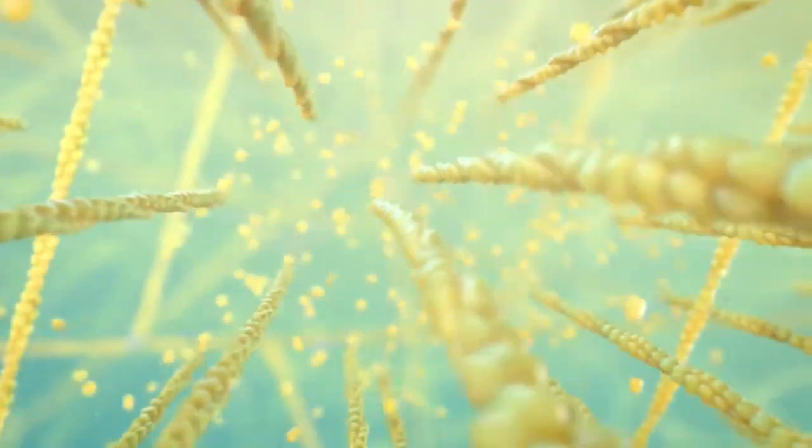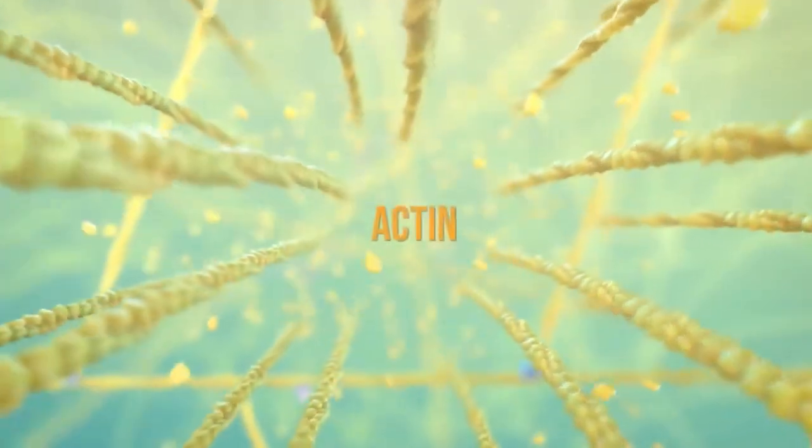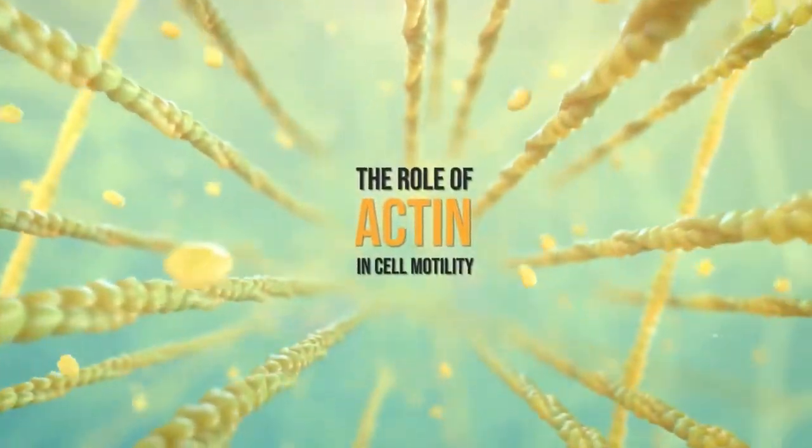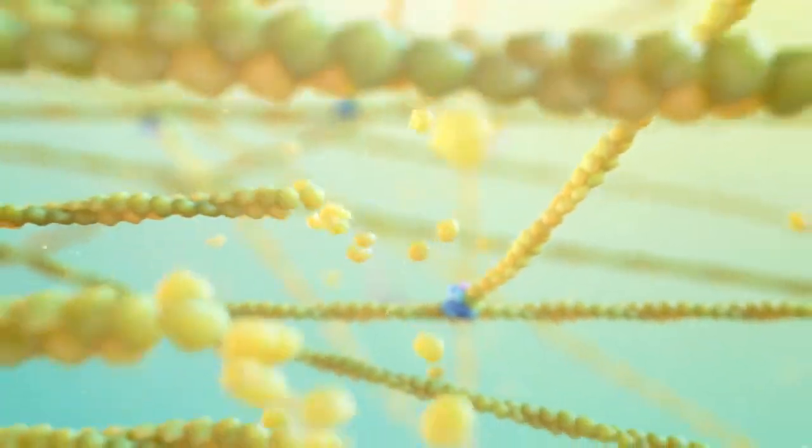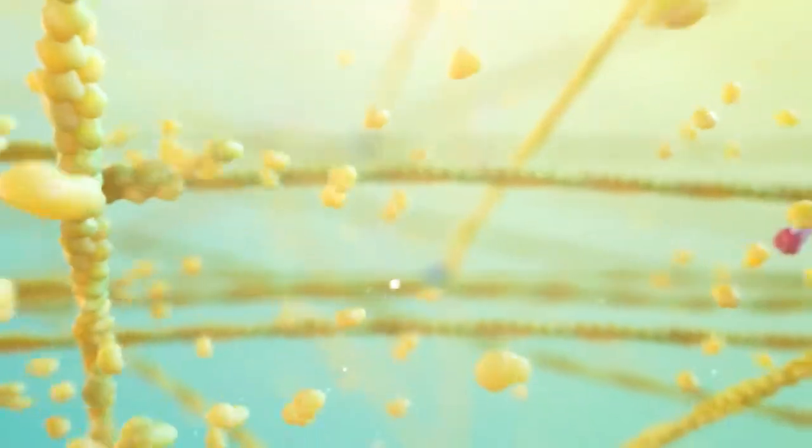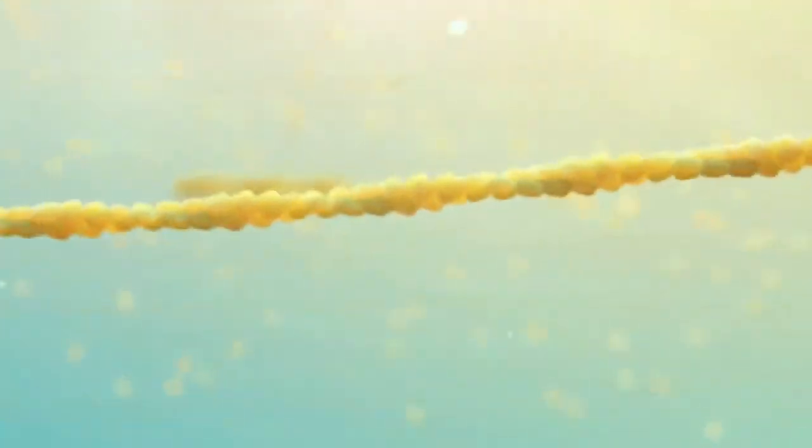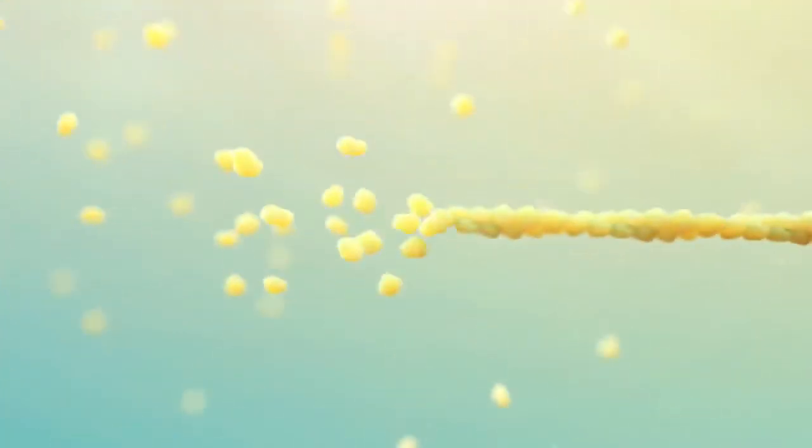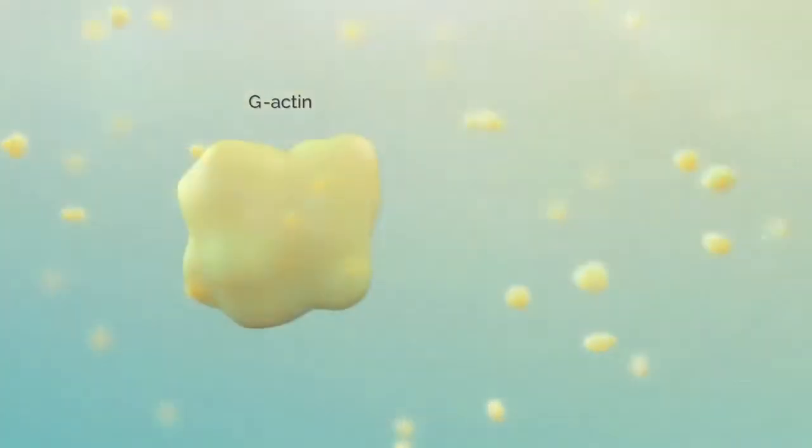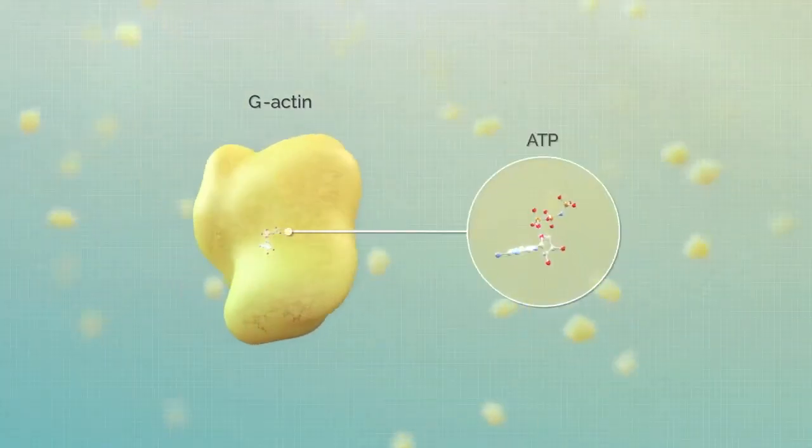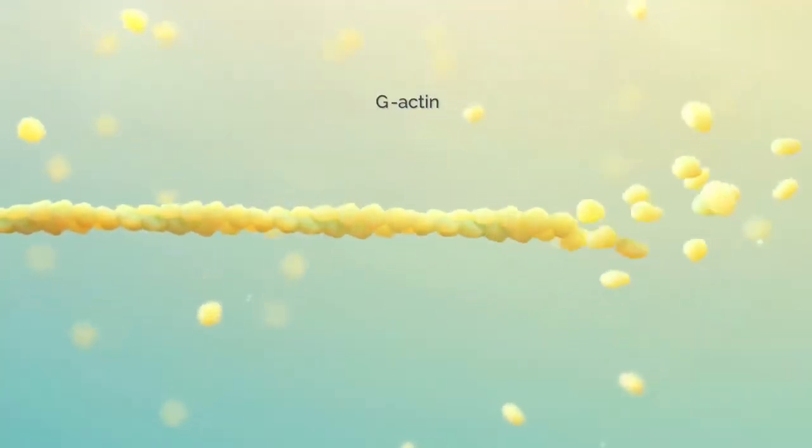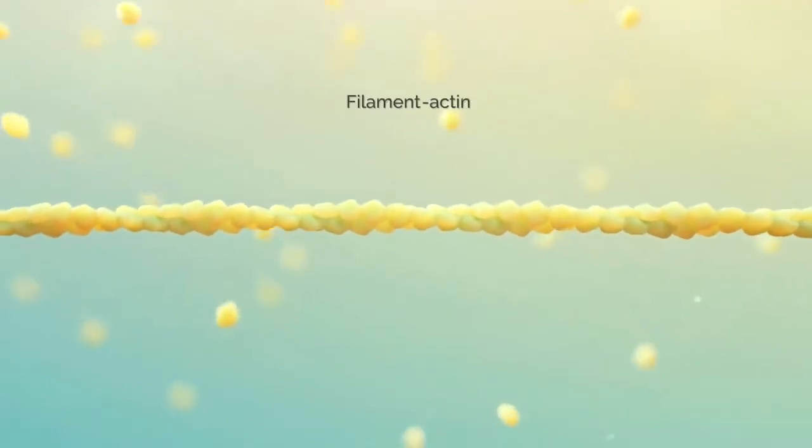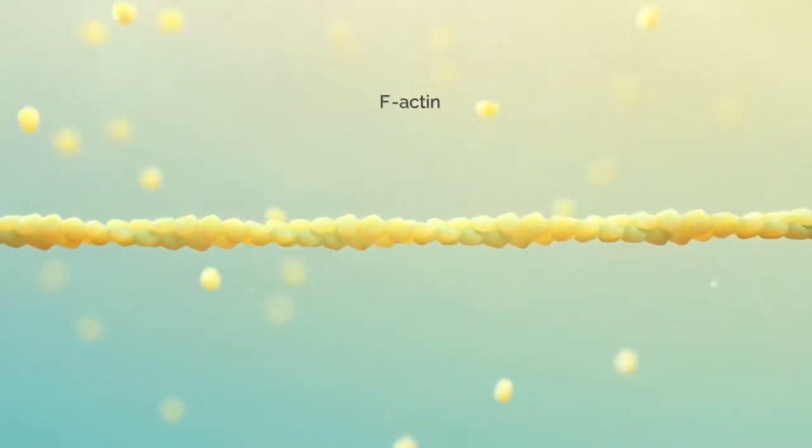The actin cytoskeleton is highly dynamic and its filaments continuously assemble and disassemble throughout the moving cell. The building block of the actin cytoskeleton is a small globular protein called G-actin, which is normally bound to ATP as a monomer. These ATP-bound G-actin monomers assemble or polymerize into filaments known as F-actin over three phases.